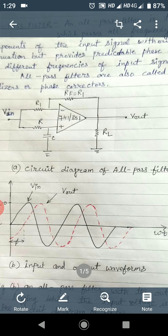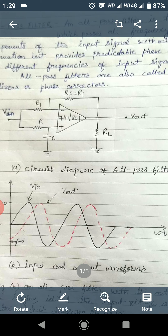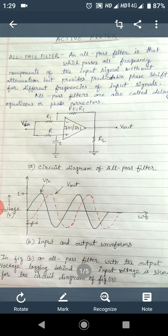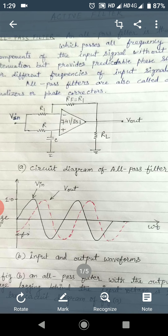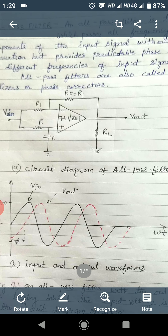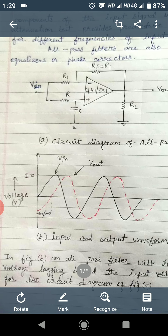The circuit diagram for the all pass filter is shown in figure A. As we can see from the figure, there are three resistances R1, RF, and R, and one capacitor C connected to make the circuit of the all pass filter. This circuit diagram is designed when the output voltage is lagging behind the input voltage, or we can say there is a phase shift between the output and input.